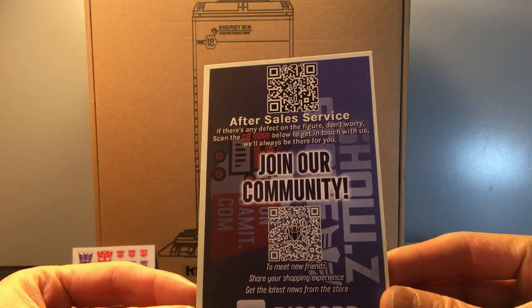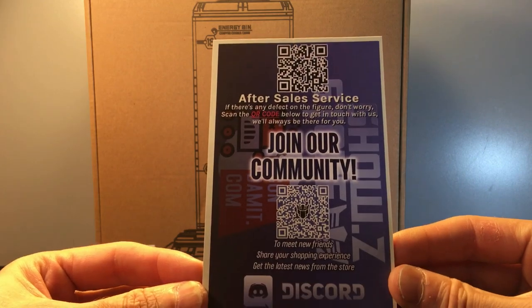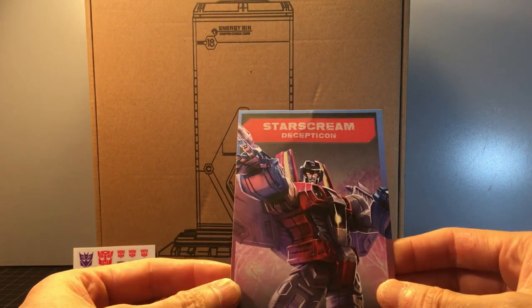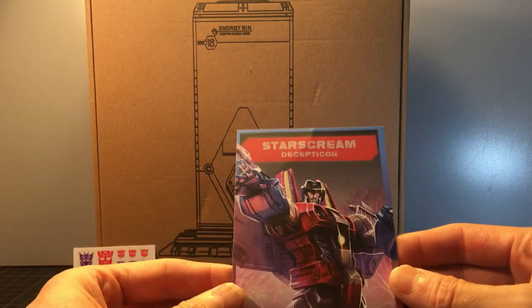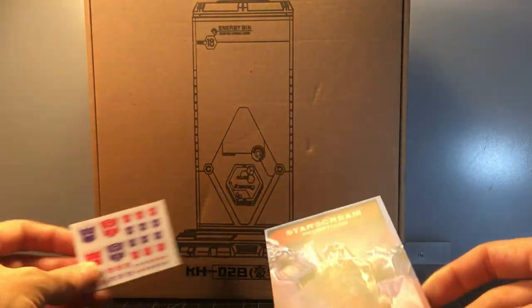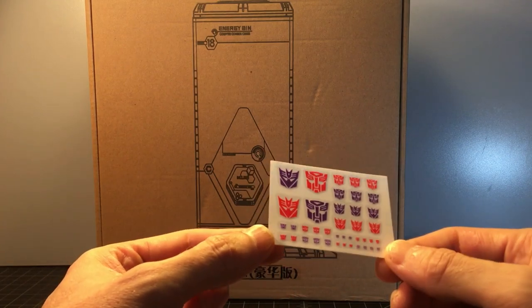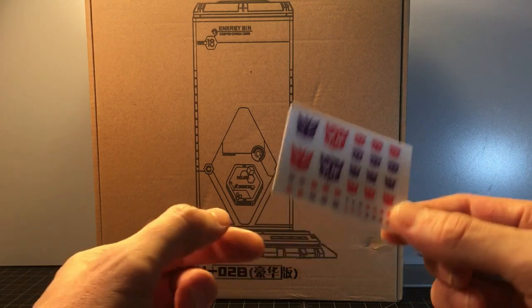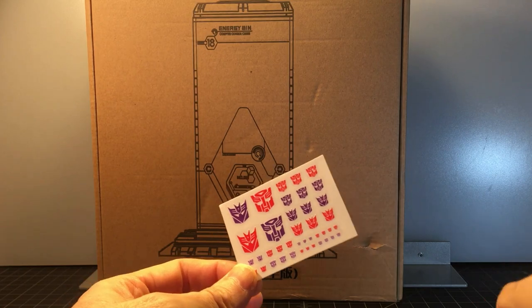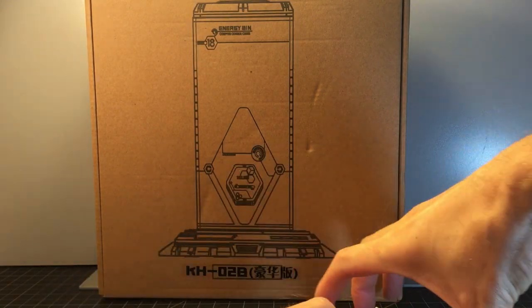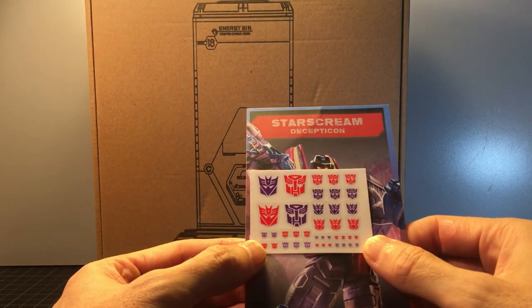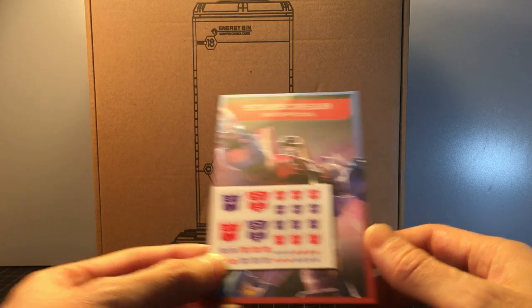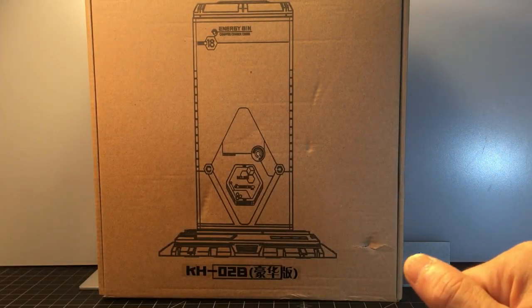Starscream happens to be one of my favorite Transformers, though I don't collect Transformers now. They also always throw in a pack of stickers, Autobot and Decepticon stickers. I have quite a few of these now, but it's always a nice little touch that they add these to your order just as a bonus from ordering from them. Everything's always packaged really well and you can track it. I do like ordering from them. You can also build up credit and points, and I think I did get like $1 off on this because I had some points built up.